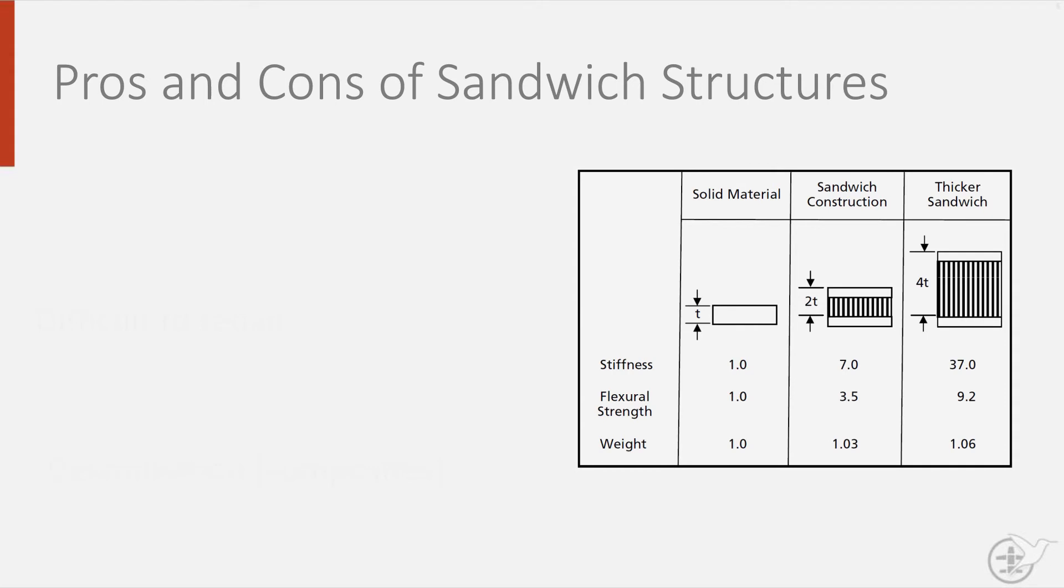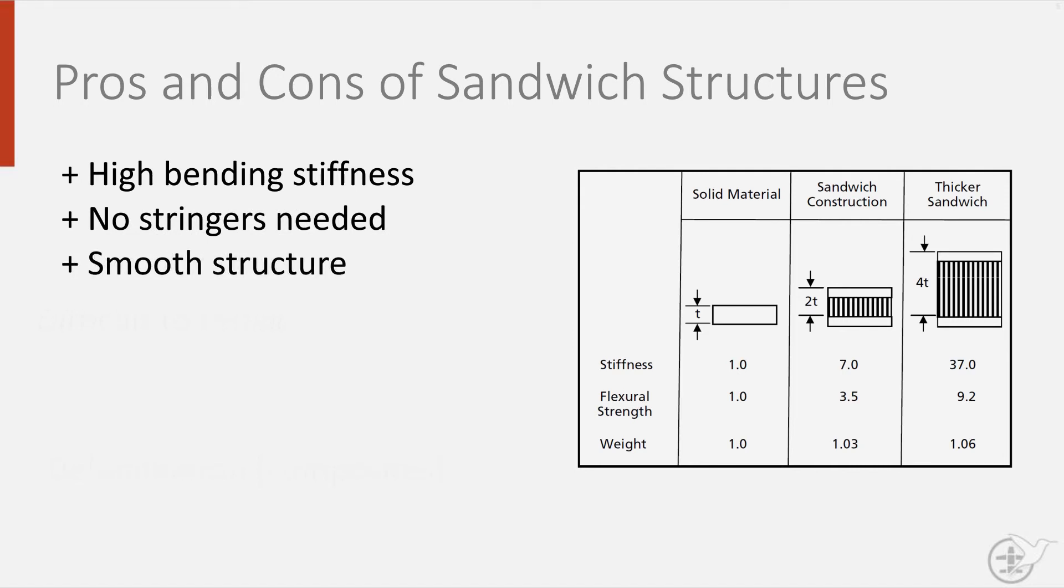Sandwich structures have the advantage that they have a high bending stiffness, and therefore need no stringers. This is one of the reasons why this type of structure is often used for floor planning. From the table you can see that a sandwich structure can be much more stiff and have greater flexural strength than a sheet of solid material of the same thickness, with a weight increase of only a few percent.